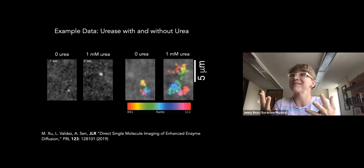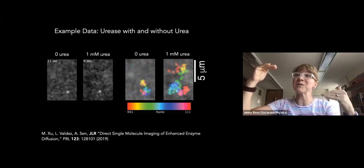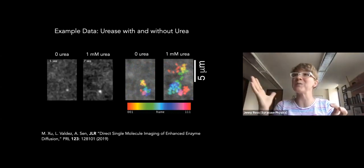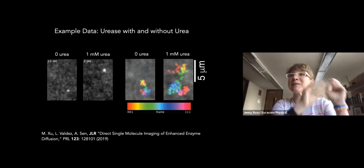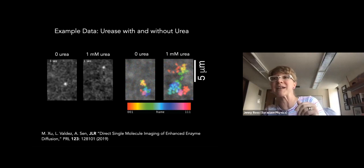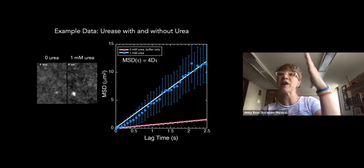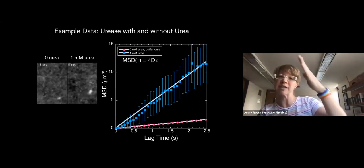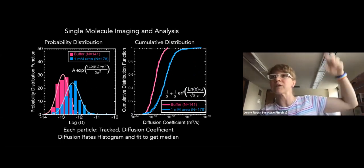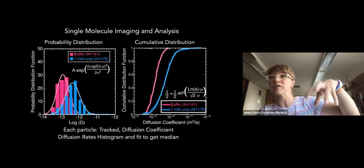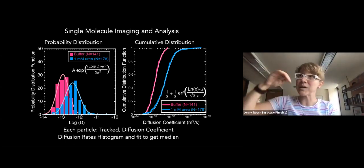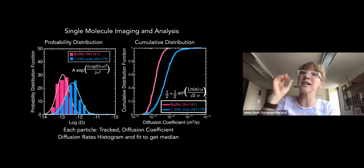With each molecule we find the mean-squared displacement, and each one has its own diffusion coefficient. You can see the slope for the molecule with fuel is much higher than without. Doing this for hundreds of molecules in the buffer condition versus with fuel, you see a significant shift in the distribution — that's the power of single-molecule imaging. You get the full distribution, not just the mean or median.